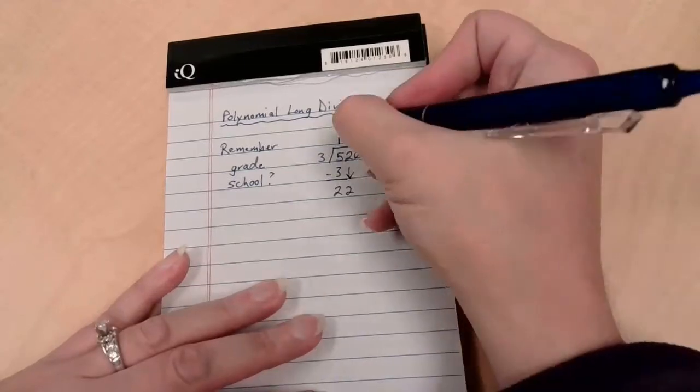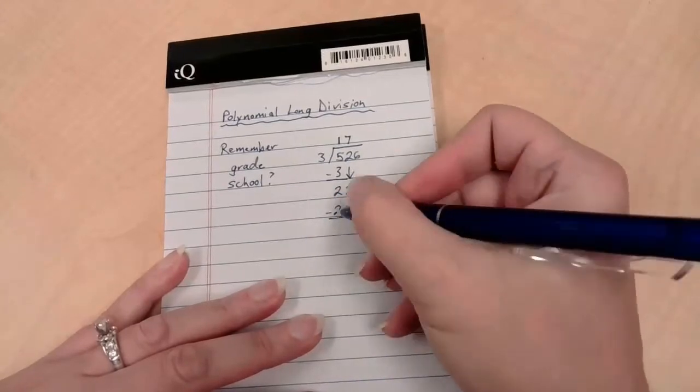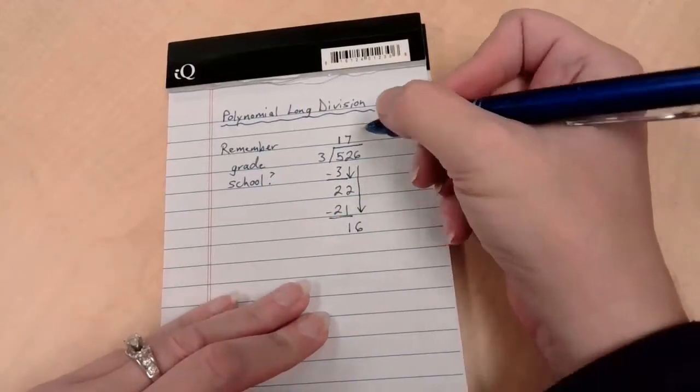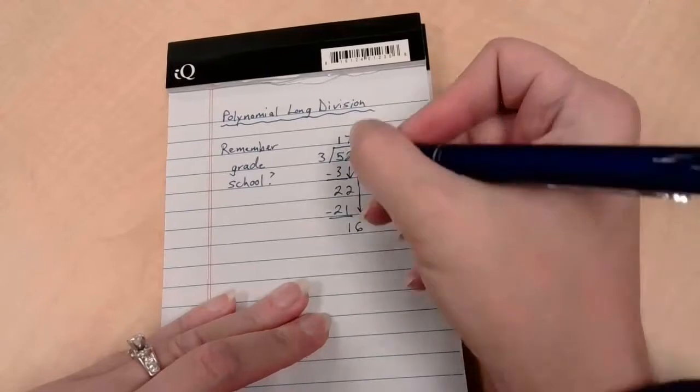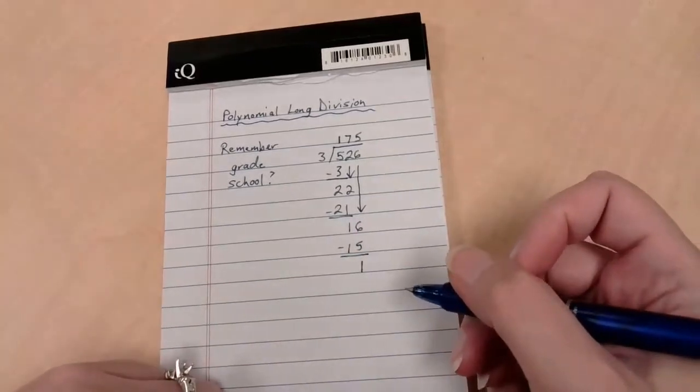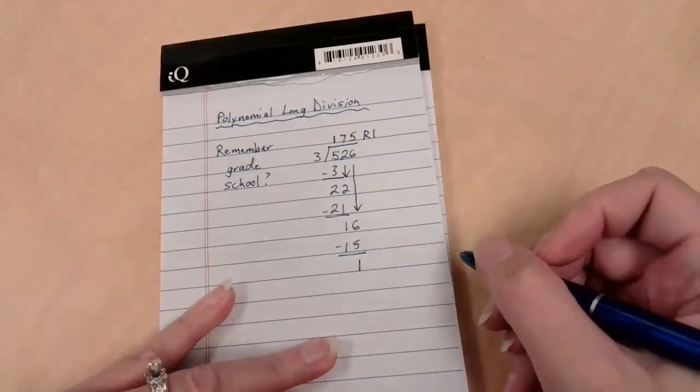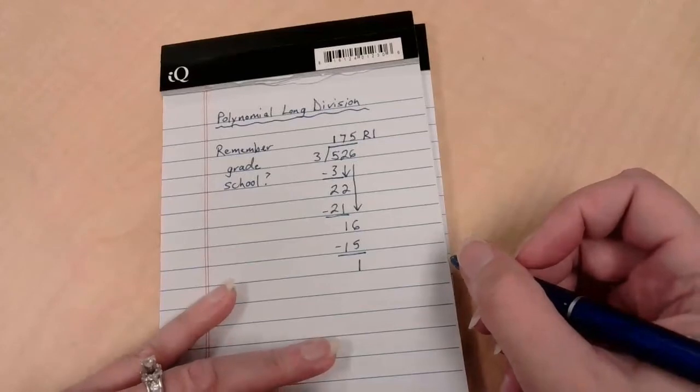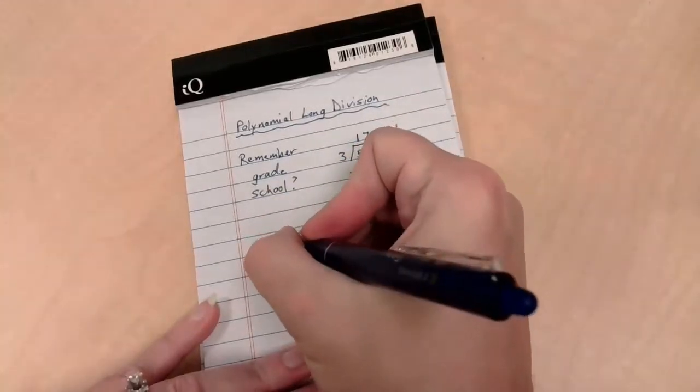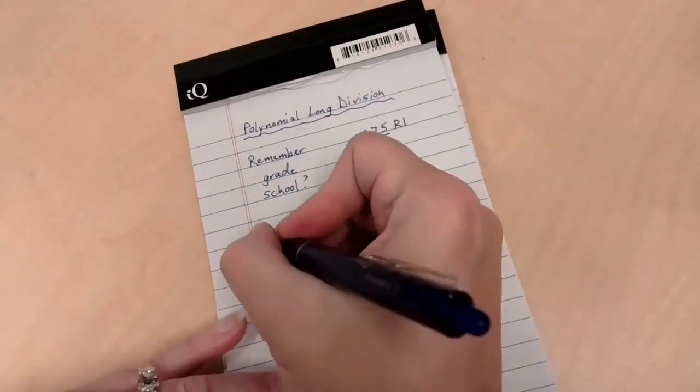5 minus 3 is 2, and then that was so much fun, we brought down the 2 and we did it again. How many times does 3 go into 22? 7 times. 7 times 3 is 21. We subtracted again, and that's going to give me 1, and we'll bring down the 6. How many times does 3 go into 16? That's going to be 5 times, and that's a total of 15. We subtract, and we get 1.